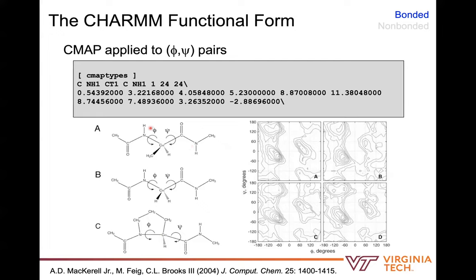This was part of the refinement in CHARMM36M. There were problems with left-handed helical balance in polyglycine and intrinsically disordered proteins that necessitated a small correction, while the rest of the CMAP surface was left alone. One of the big changes in CHARMM36M was an adjustment in left-handed alpha-helical space.